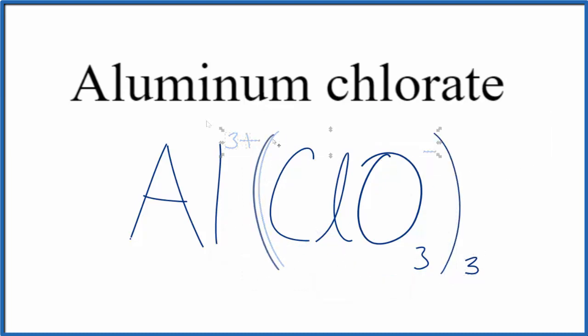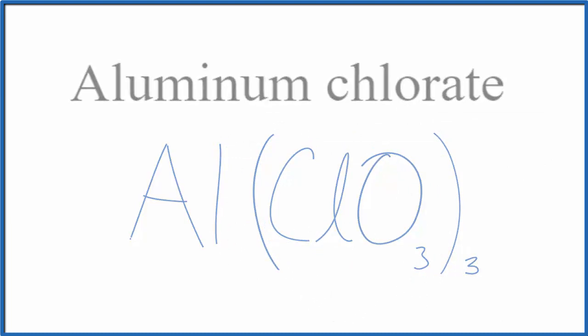Get rid of these symbols here, and this is the formula for aluminum chlorate: Al(ClO3)3. This is Dr. B, and thanks for watching.